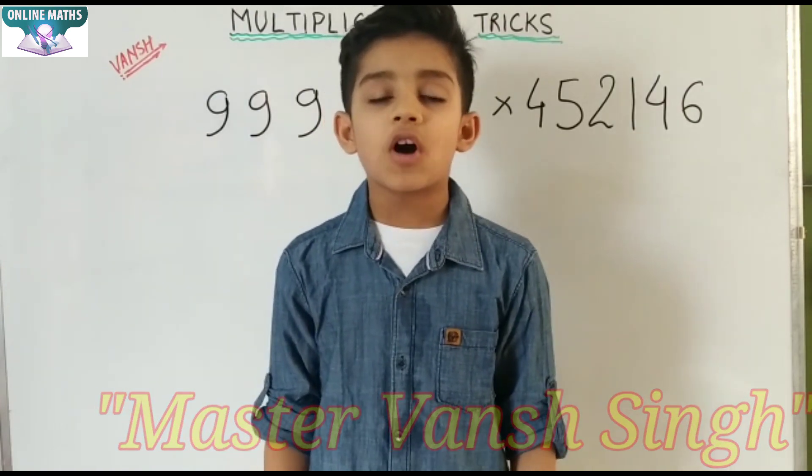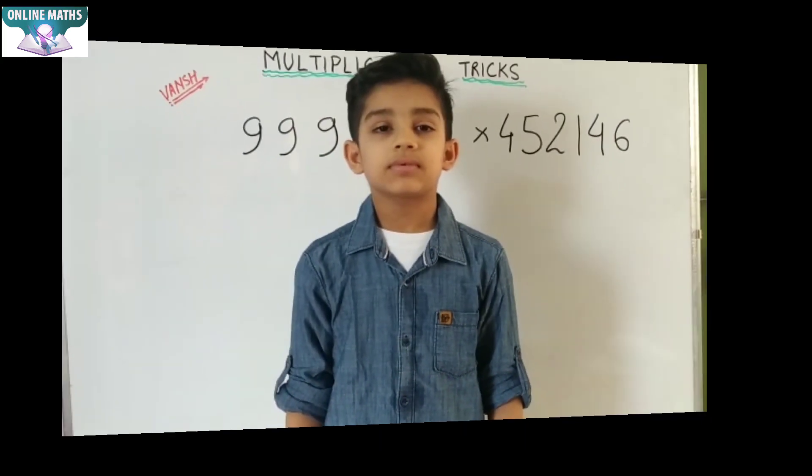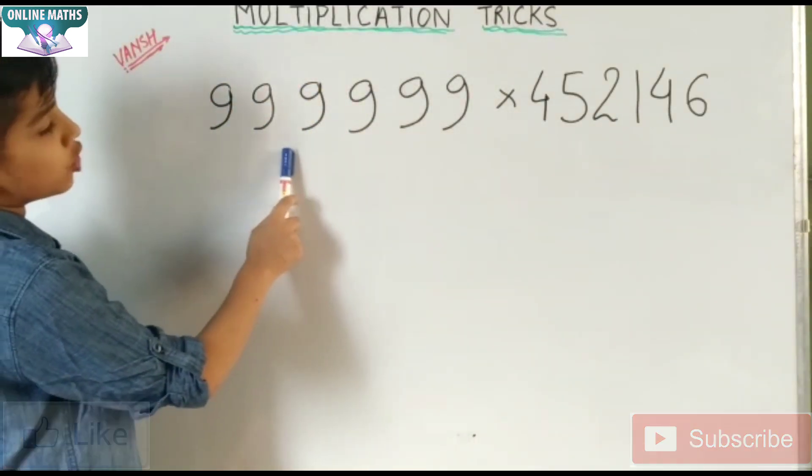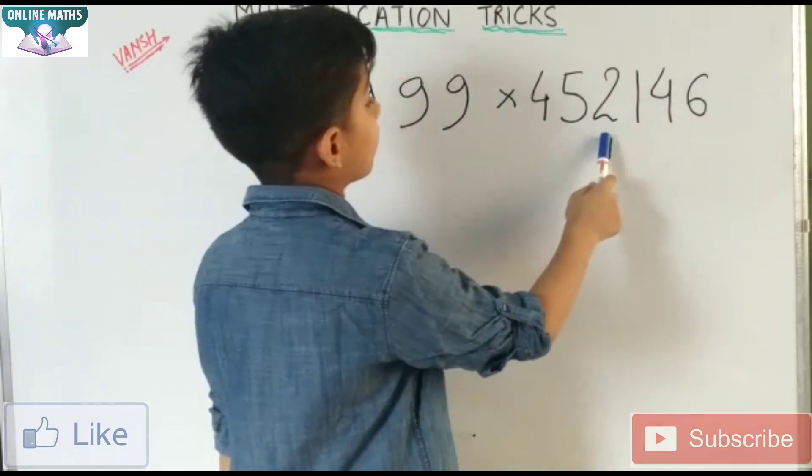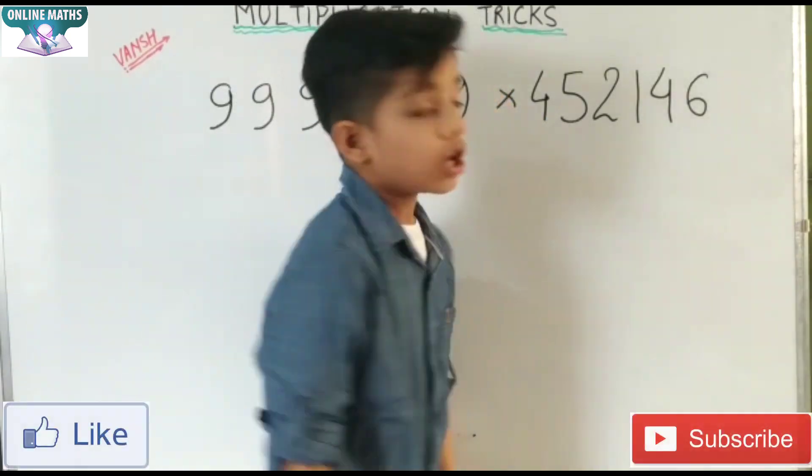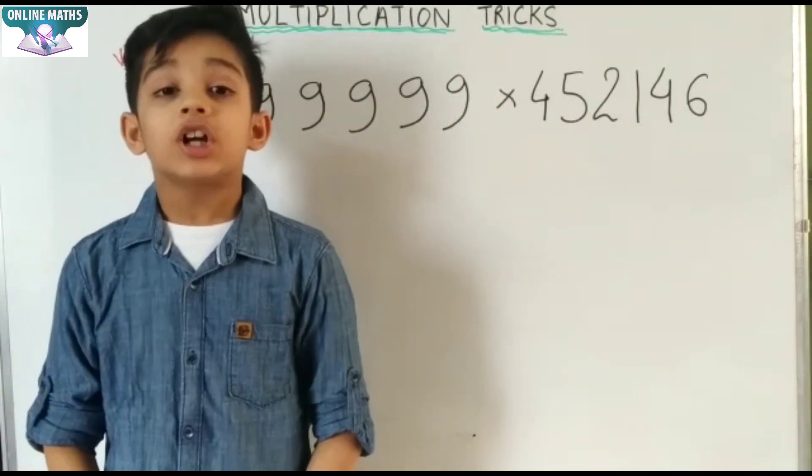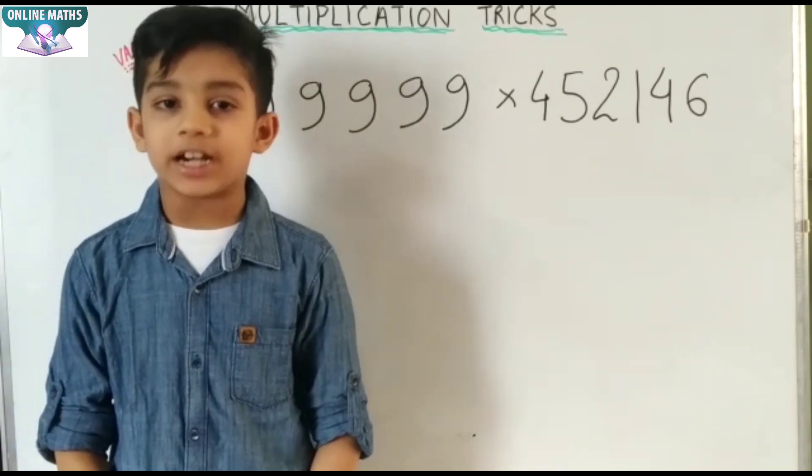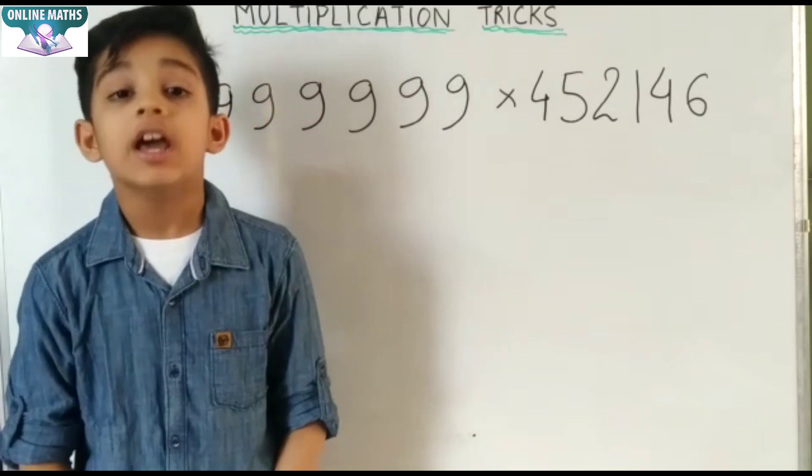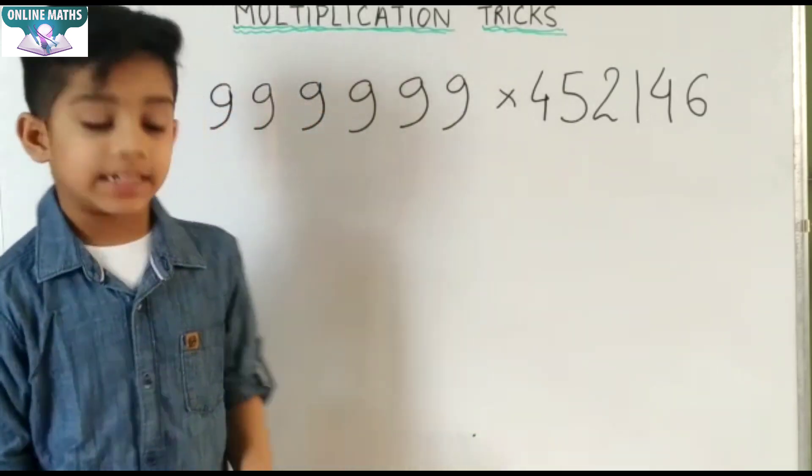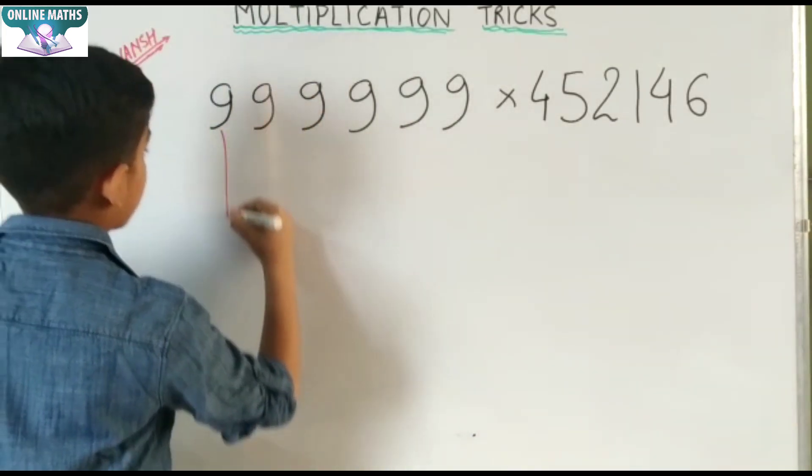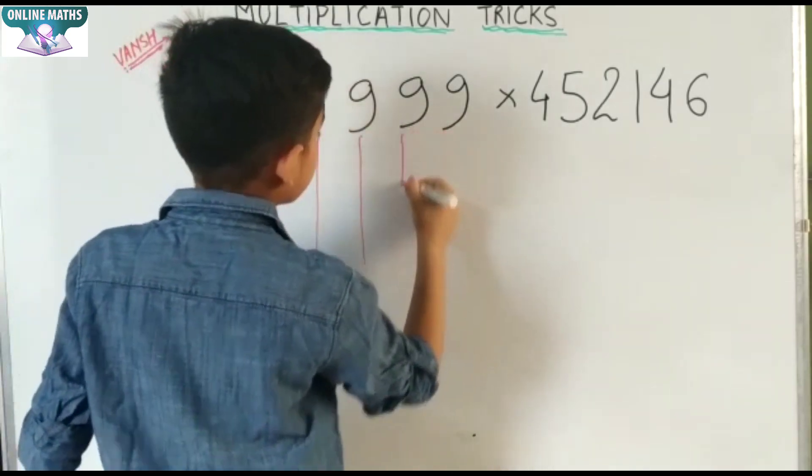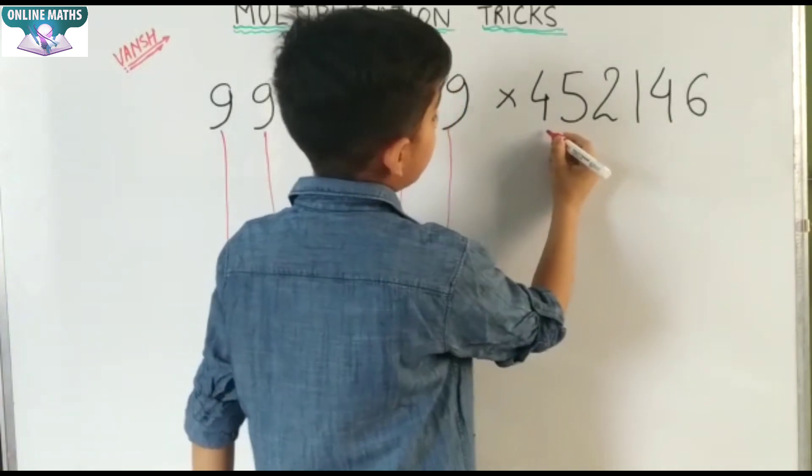So let's move forward. Our example is 999999 multiply by 452146. How much time will you take to solve this question? Four minute, three minute, two minute, one minute? I will solve this question in 15 seconds using one less number.